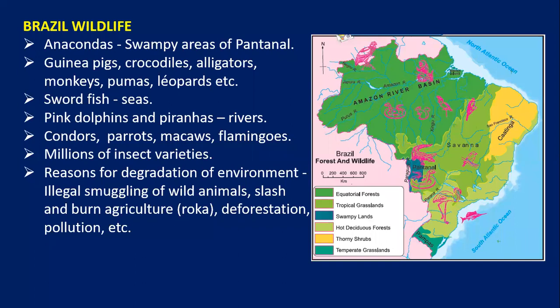This was chapter number 5. The types of vegetation in Brazil are equatorial forest, tropical grasslands, swampy lands, hot deciduous forest, thorny shrub, and temperate grasslands. The vegetation found in the Drought Quadrilateral is called Caatinga. Broad quadrilateral is just a small part — Caatinga is huge, so mark it accordingly.